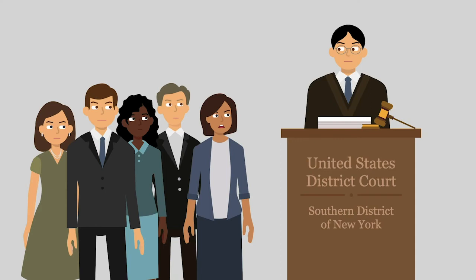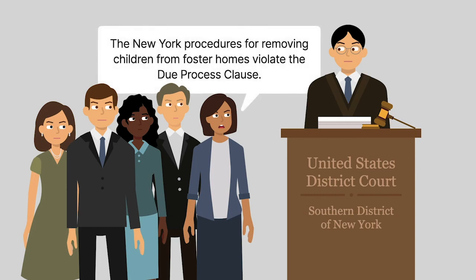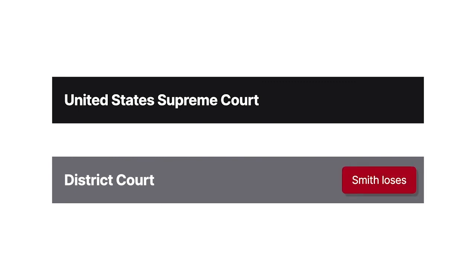Organization of Foster Families for Equality and Reform was an organization of foster parents. It, along with numerous foster parents, filed a class-action lawsuit in federal district court. They alleged that the New York procedures for removing children from foster homes violated the Due Process Clause of the 14th Amendment. The plaintiffs sued various New York state and New York City officials, including Smith. The district court found that the procedures were unconstitutional. The defendants appealed to the United States Supreme Court.